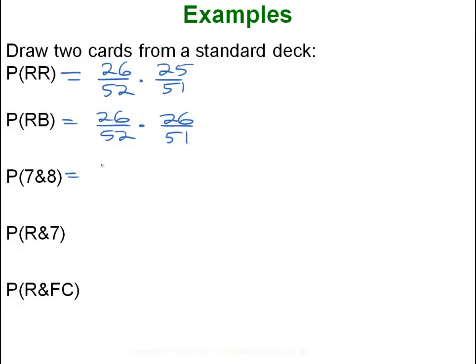The first one has got to be a 7. Well, there is only 4 sevens out of 52 and the next one has got to be an 8. There is also 4 eights, again out of 51.